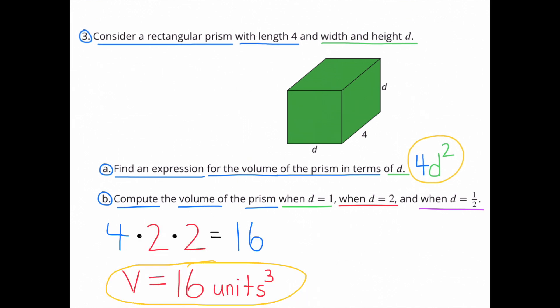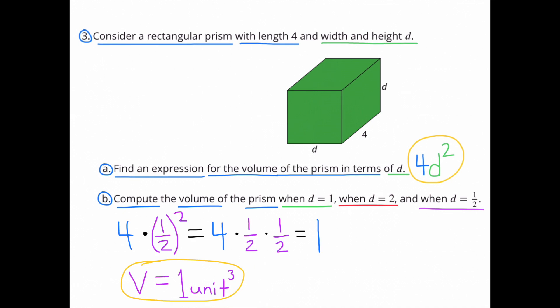When d equals 2, it would be 4 times 2 times 2, which equals 16. So the volume would be 16 units cubed. When d equals 1 half, it would be 4 times 1 half times 1 half, which equals 1. So the volume would be 1 unit cubed.